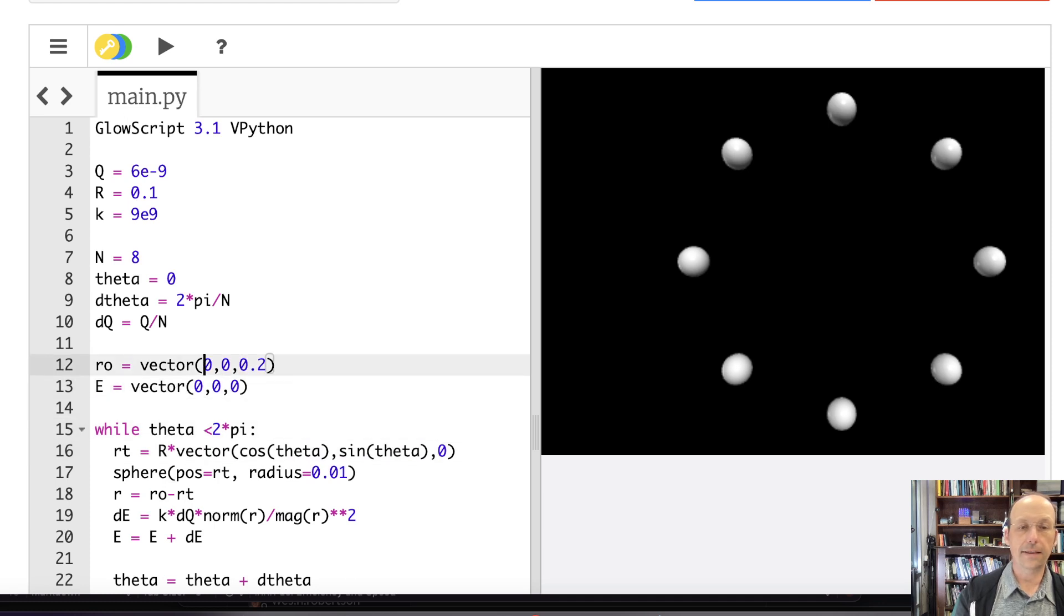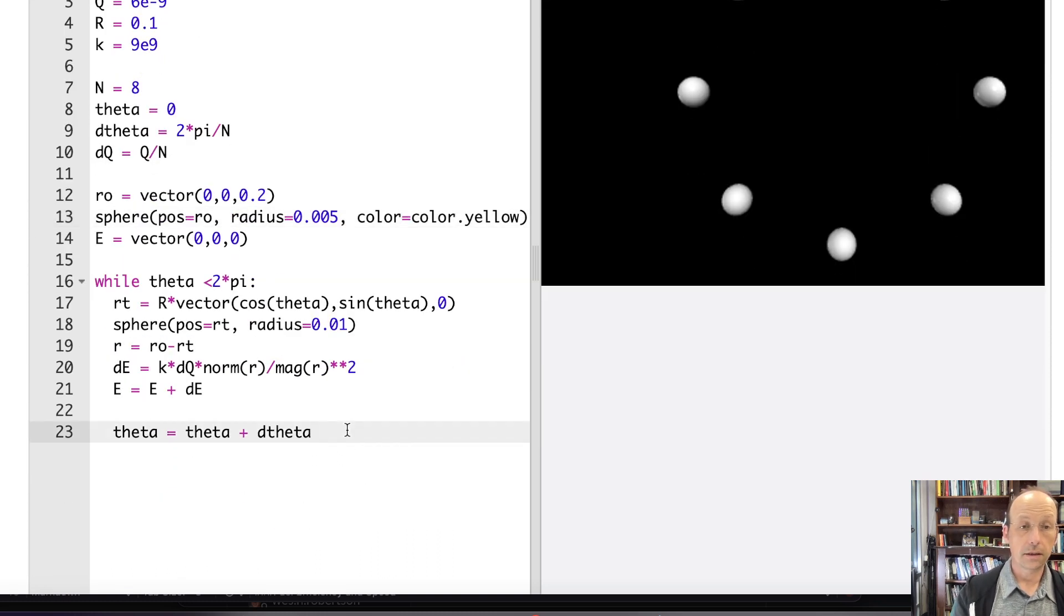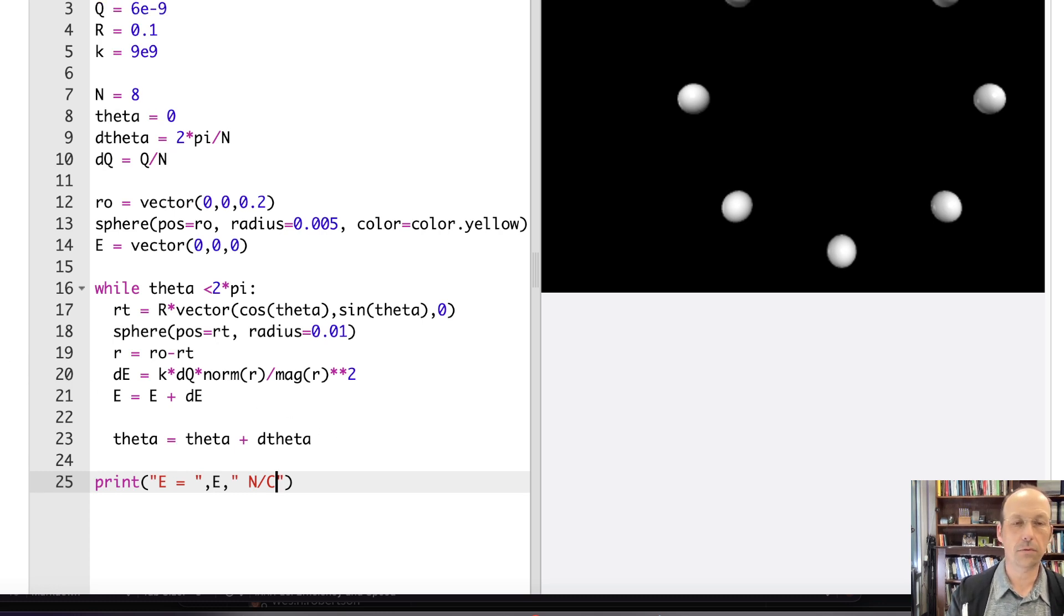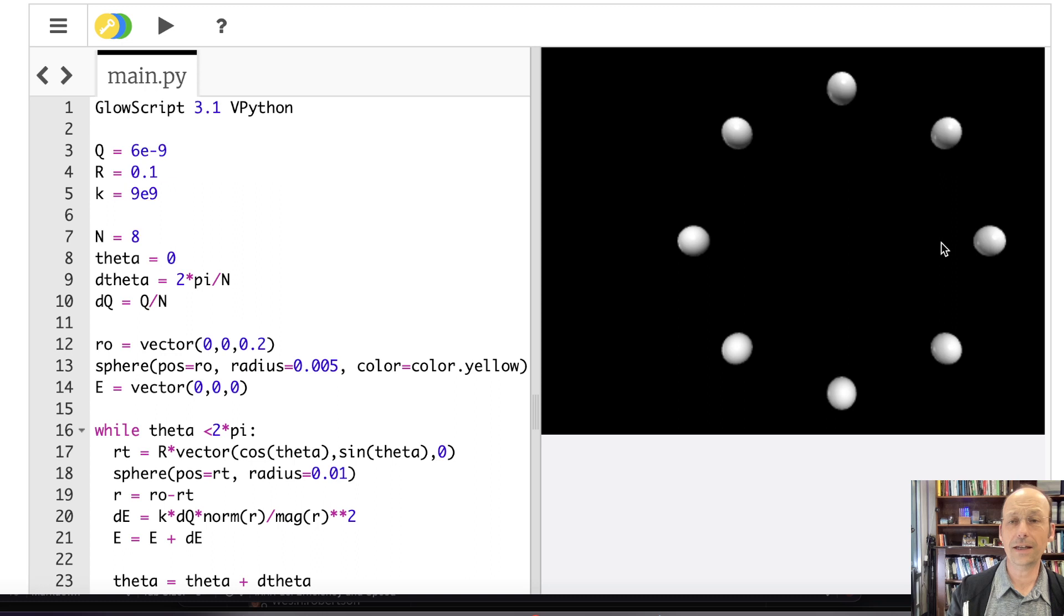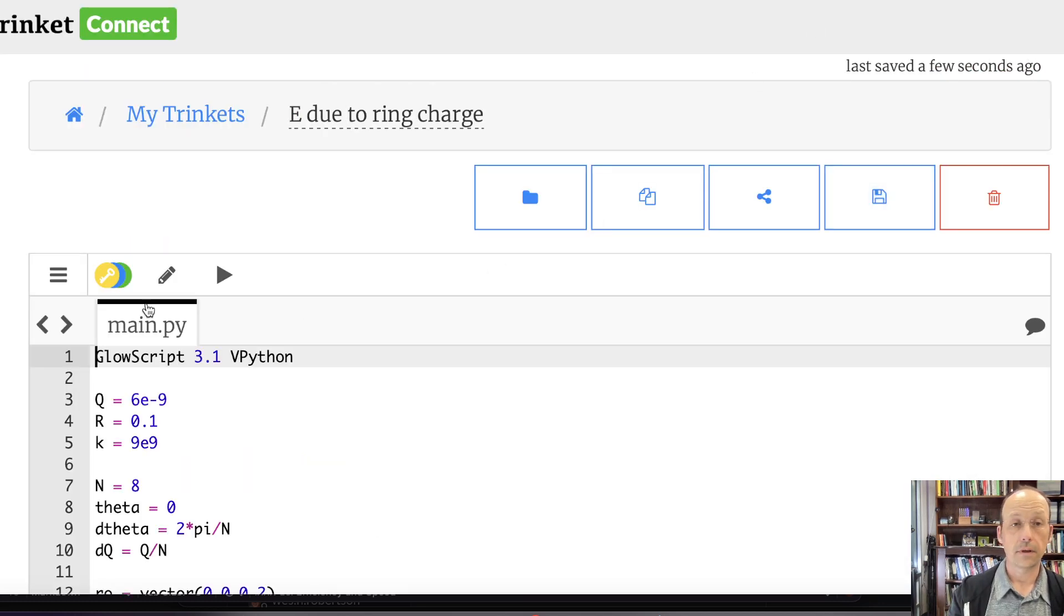I could put a sphere at the observation location. Sphere at position r_o, radius 0.005, color yellow. Then print E equals E with units newtons per coulomb. Let's run.